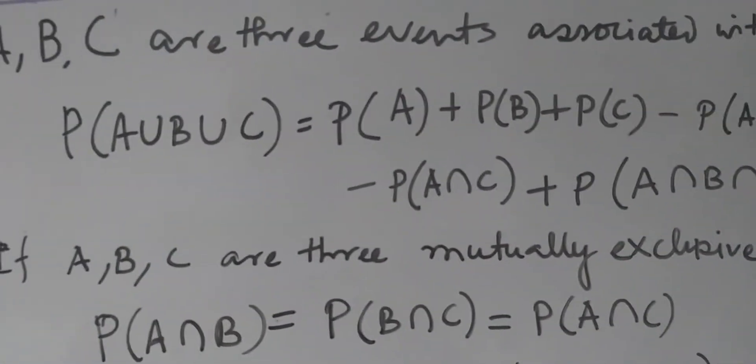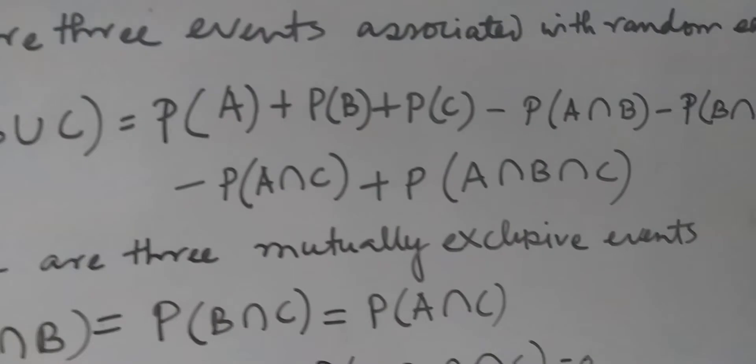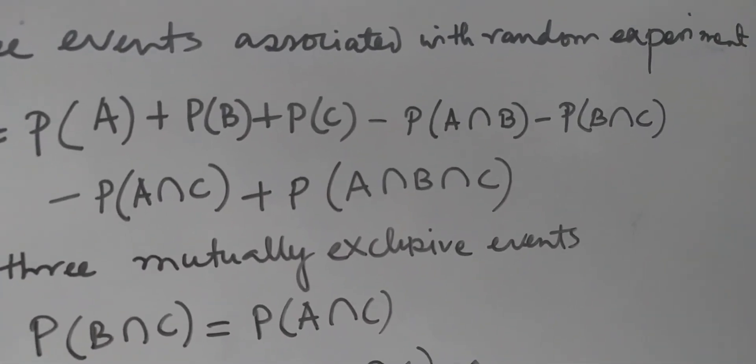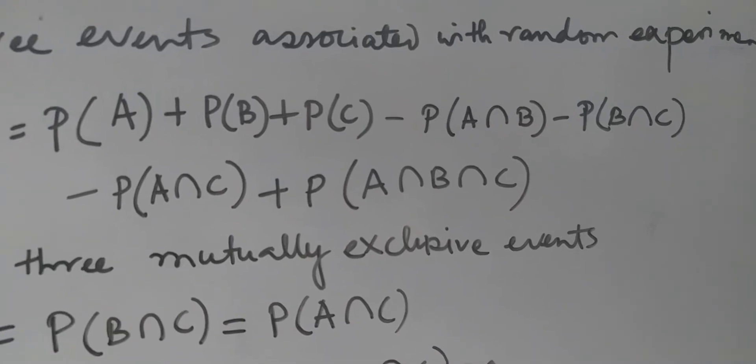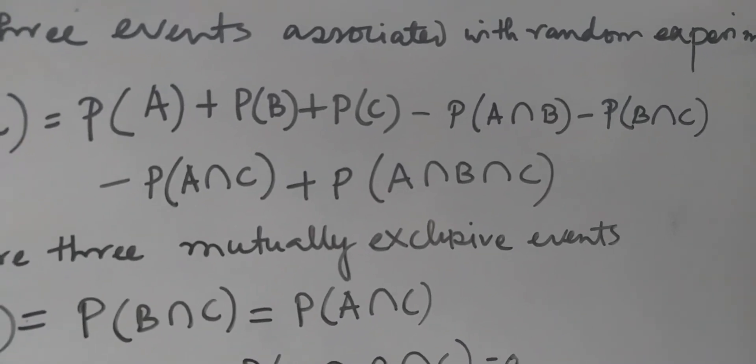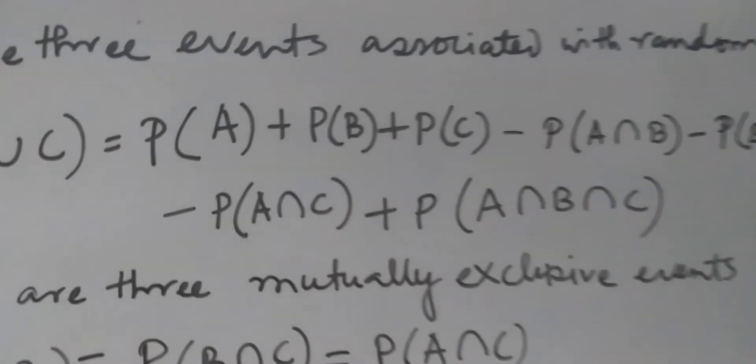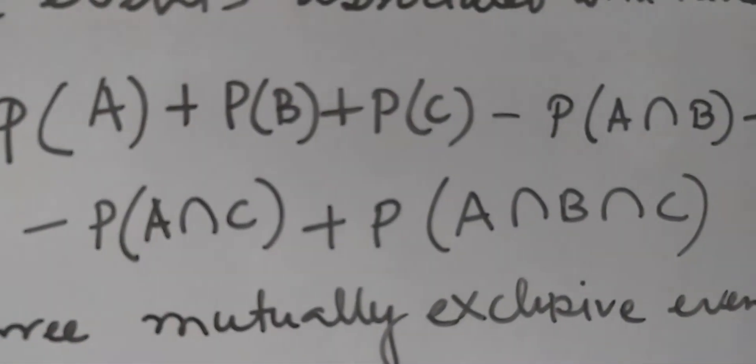First, if it is a random experiment, then P(A∪B∪C) is equal to P(A) plus P(B) plus P(C) minus P(A∩B) minus P(B∩C) minus P(A∩C) plus P(A∩B∩C).